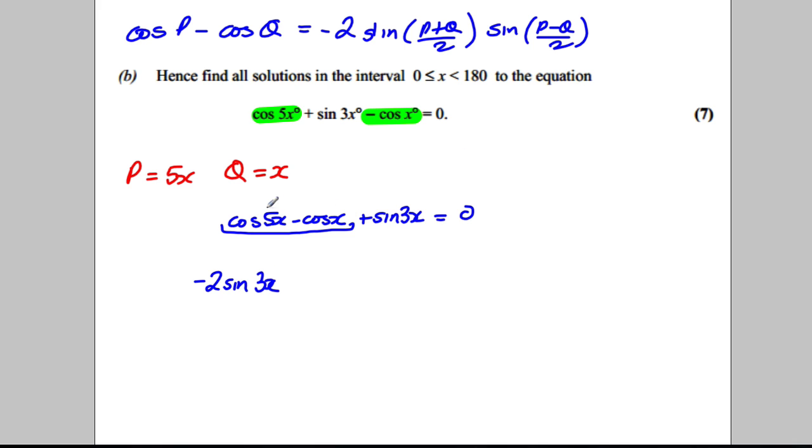And then I take them away and divide by 2, which should be 5x - x is 4x divided by 2 which is 2x. So sin 2x plus sin 3x is equal 0.